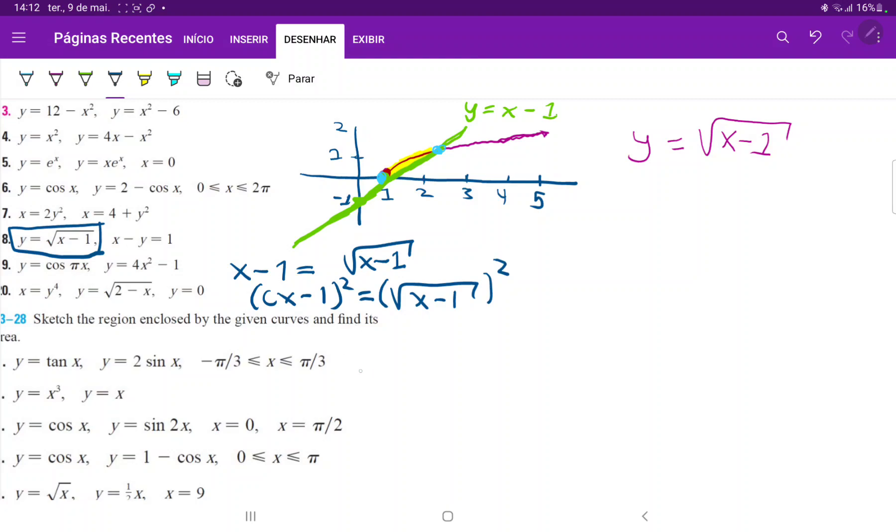x minus one squared is equal to square root of x minus one squared. So on the left-hand side, when we expand that, we do have x squared minus two x plus one. And on the right-hand side, the square root of the square just cancels out. So this is just x minus one.